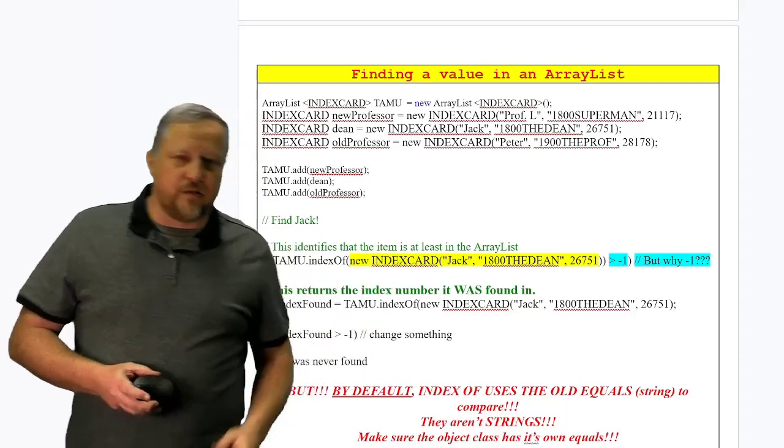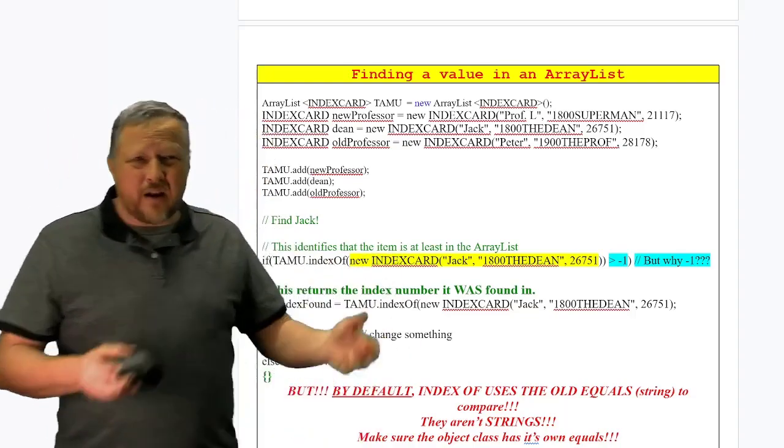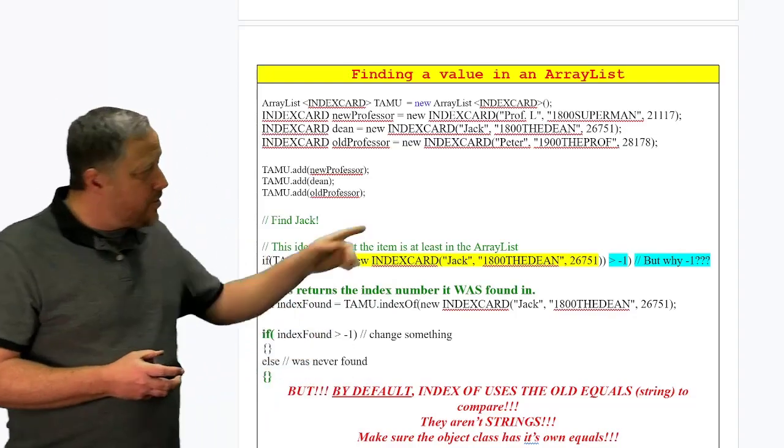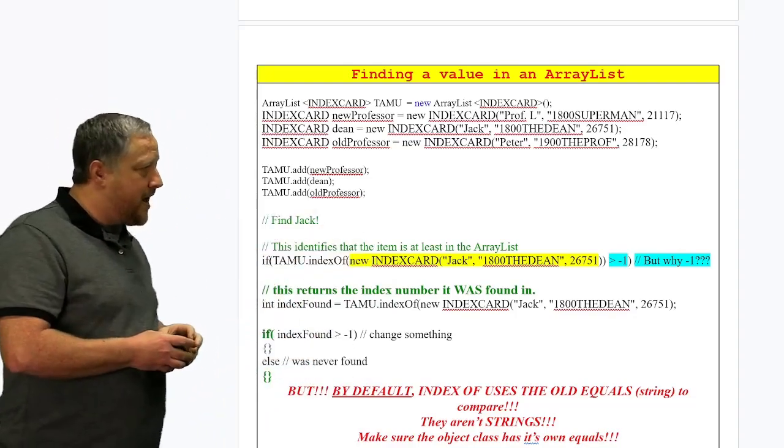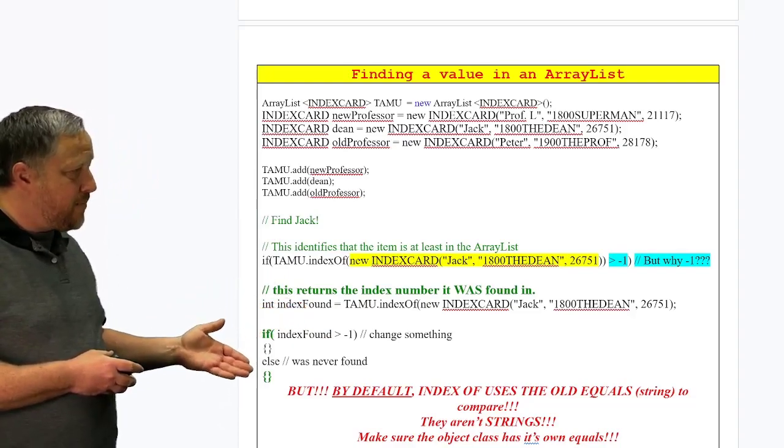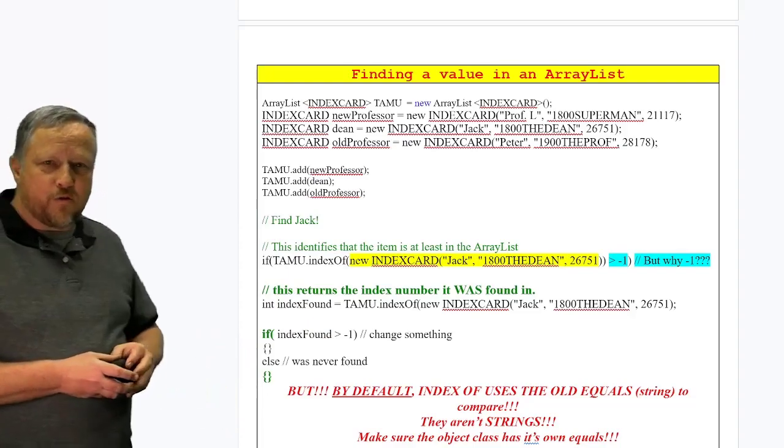But if it doesn't find anything, it might return a negative one or a negative something else. But zero is a legit value, so that's why I have to do the greater than one. So then we go ahead and get our index found, do an if statement, see if it was there, and then go from there.